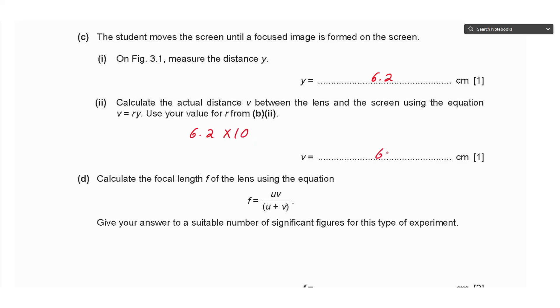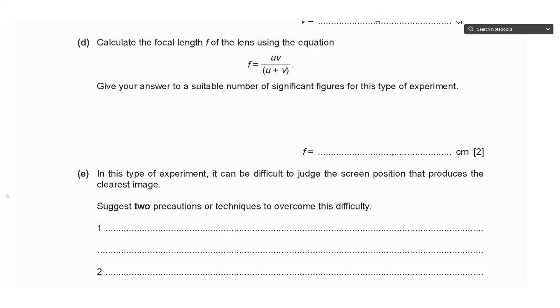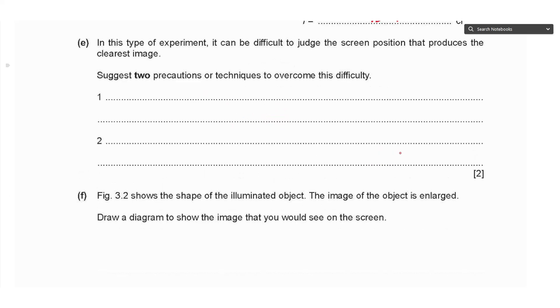Part D says calculate the focal length f of the lens using the equation uv over u plus v. So u was 20.0, v was 62, divided by 20 plus 62, that gives an approximate value of 15 or 15.1 centimeters. Part E says in this type of experiment it can be difficult to judge the screen position that produces the clearest image.